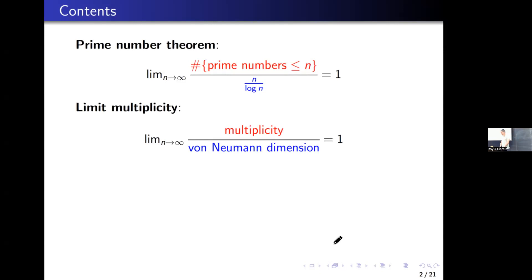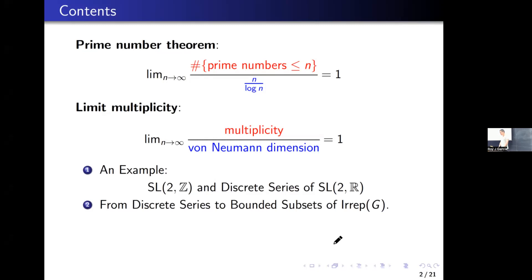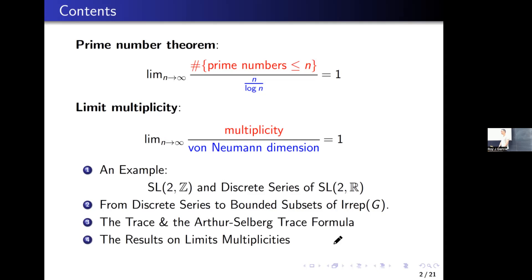That is an informal statement of my result. I proved the limit of some multiplicity divided by von Neumann dimension is 1. Here's the plan of this talk. I will start from the most basic example, which is the full modular group SL2 over integers, and the discrete series representation of the elementary Lie group SL2R. Then I will extend this result to any Lie group and extend discrete series to a bounded subset of irreducible representations of G. I will explain what is a bounded subset of the irreducible representations of a Lie group. Then I will show how we can connect the Selberg trace formula with the trace on the von Neumann algebra. Then I will state the result and discuss the sketch of proof.